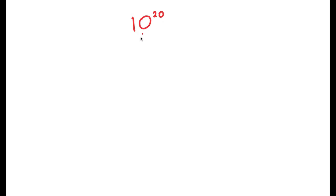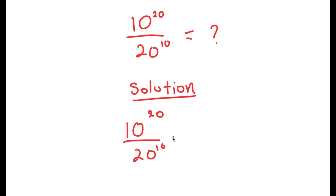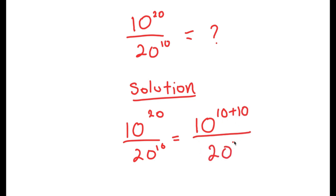In this video, I'm going to solve the problem 10 to the power of 20 over 20 to the power of 10. I'm going to rewrite this as 10 to the power of 10 plus 10 over 20 to the power of 10. I rewrote the exponent 20 as 10 plus 10.